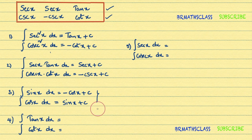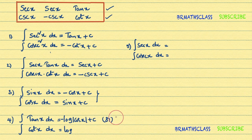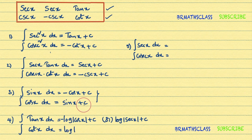Now: integral of tan x dx and integral of cot x dx — both formulas start with log. Integral of tan x dx is minus log mod cos x plus C, which can also be written as log mod secant x plus C. Observing that integral of cos x dx is sine x plus C, integral of cot x dx is log mod sine x plus C.